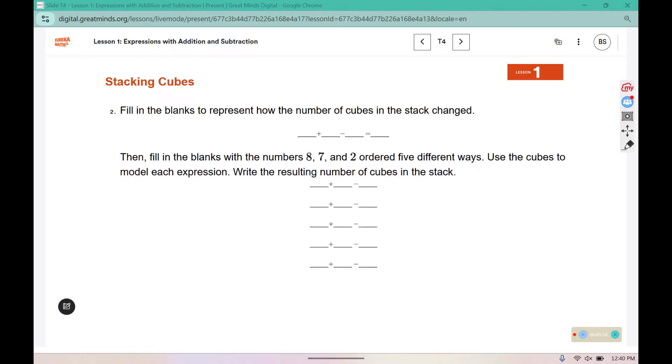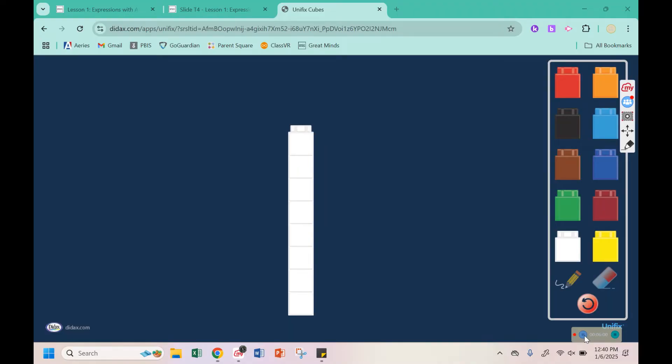For problem two we're going to start with eight cubes again, and then we're going to add seven. And then we are going to remove or subtract two. So we had eight, we added seven, and then we remove two. How much do we have here? We had thirteen.